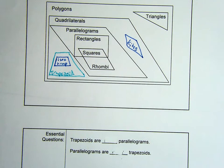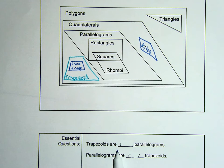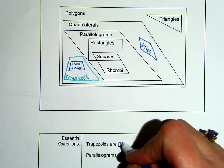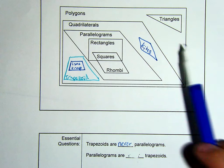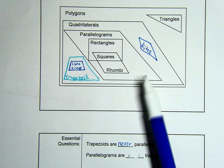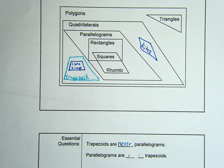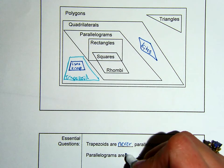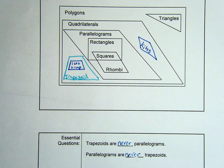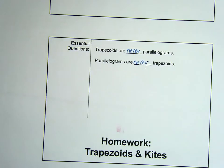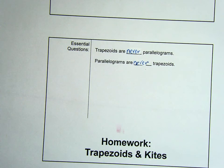Let's play our sometimes, always, never. Trapezoids are never parallelograms. Because again, their box and the parallelogram box do not overlap or not contained inside of each other. Parallelograms are blank trapezoids. They are never trapezoids. So again, both ways, they are never. Your homework is trapezoids and kites. Thank you.